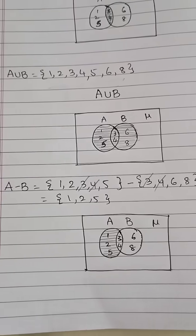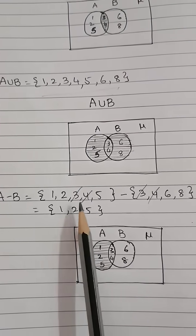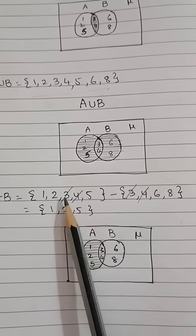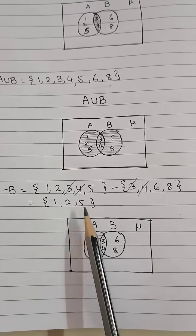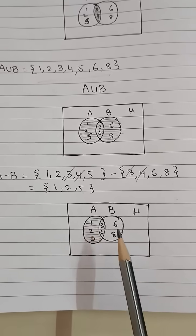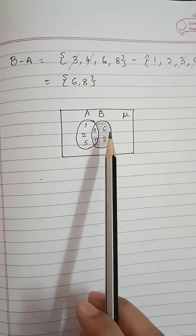For A minus B, A set minus B set means removing common terms. A minus B will be {1, 2, 5} - shade only the A part. For B minus A, shade only the B part.